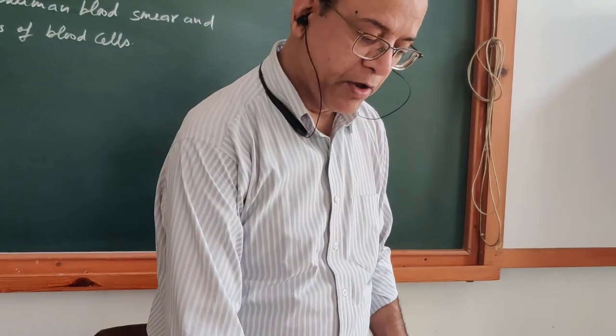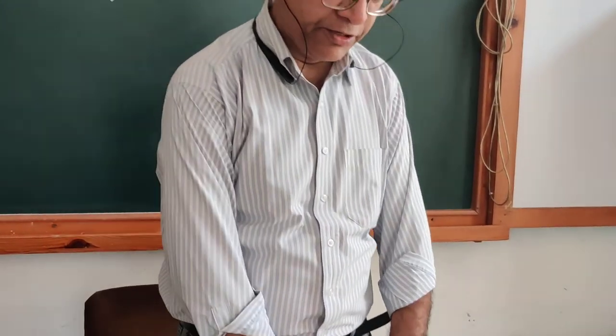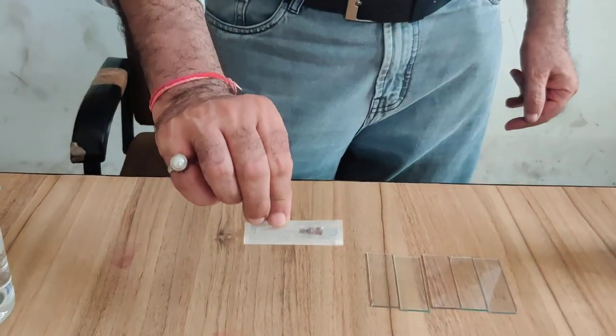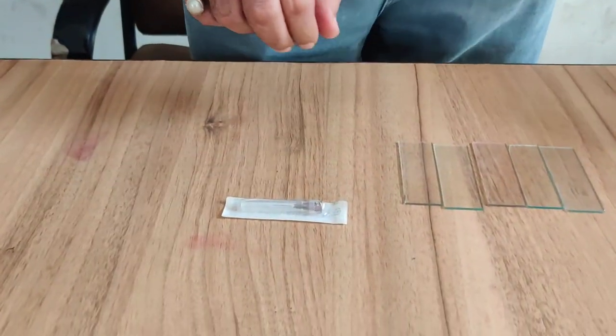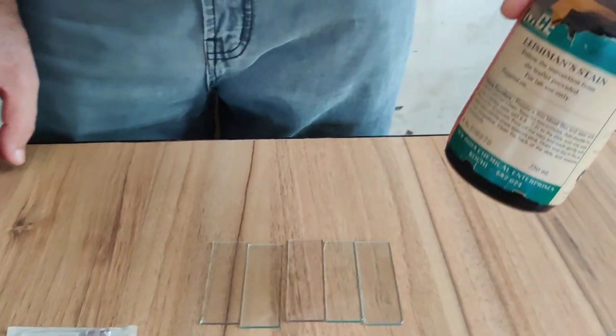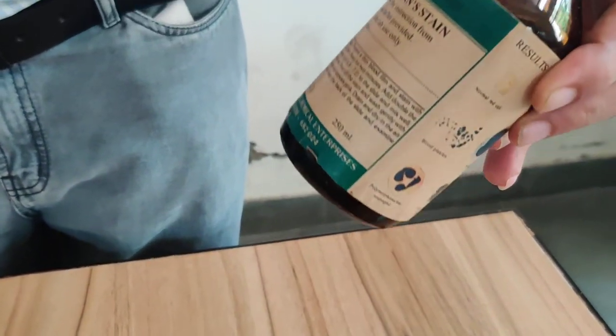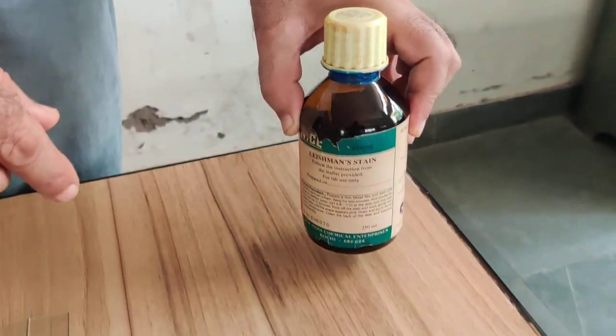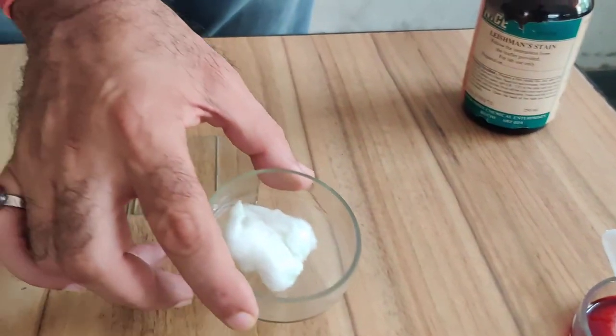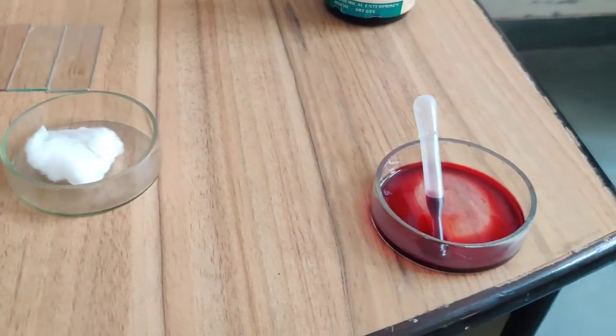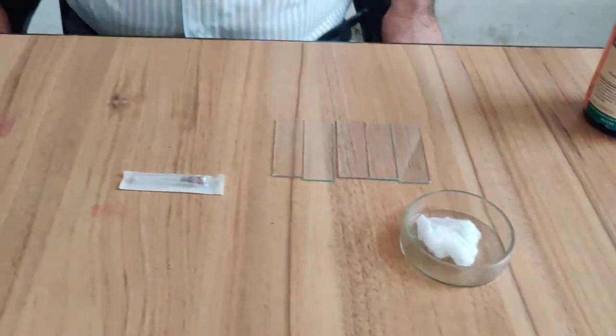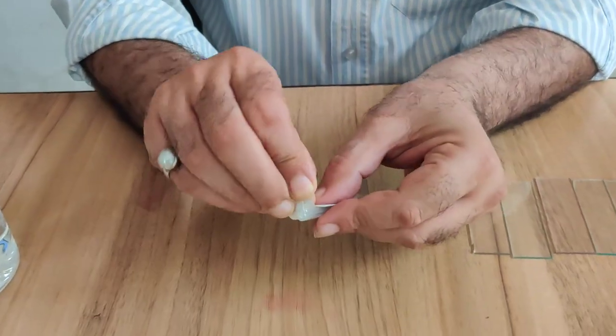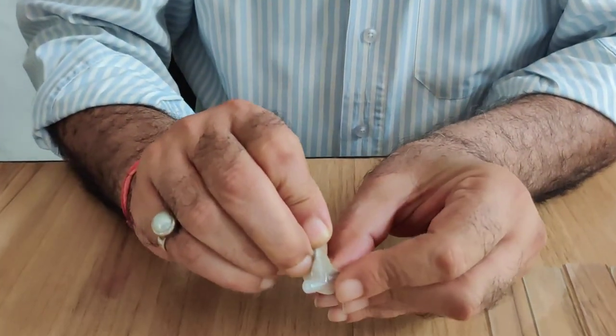For the preparation of this slide of blood smear blood film, we need some slides, this is a needle, a sterilized needle. This one is Leishman's solution. I have taken some solution here. Cotton. You will spread, do it carefully because you have to pierce your finger. So first take out the needle.